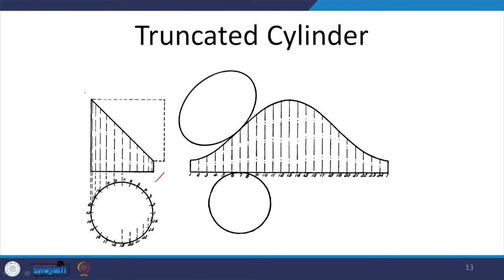Suppose there is a cylinder which is cut by a plane. Again, we divide the circle into multiple parts — here the circle has been divided into 24 equal parts — and all we do is open the surface up. This length is equal to the circumference of the circle divided into 24 equal parts. For each part, each parallel line, the varying heights will be marked. When we mark these varying heights and join them, we get the vertical part of the truncated cylinder. At the bottom is a base circle, marked here.